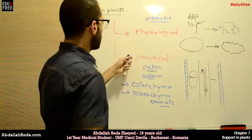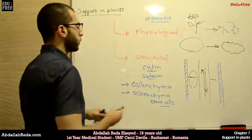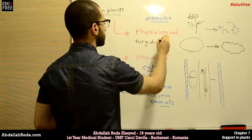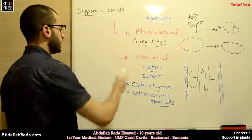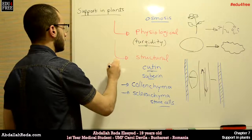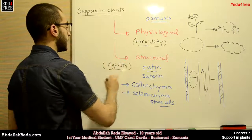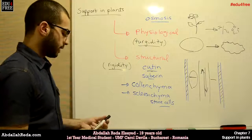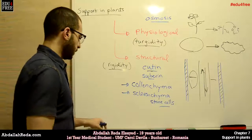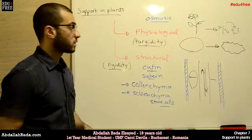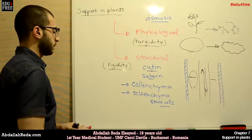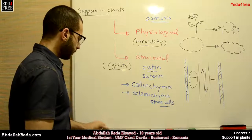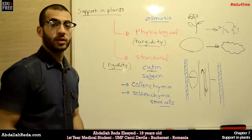The physiological support maintains the turgidity of the plant, and the structural support maintains the rigidity of the plant. Next time, we are going to talk about support in humans — specifically, the skeletal system and the main bony structures of the human body.